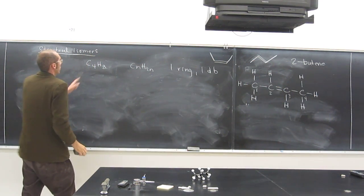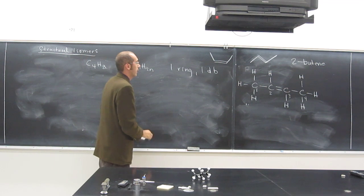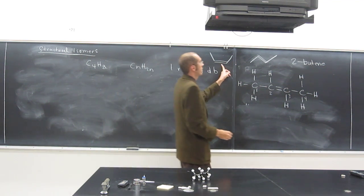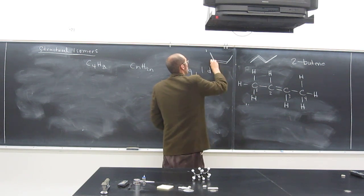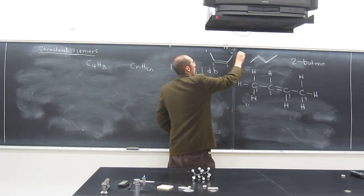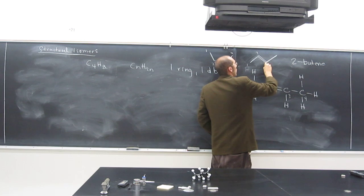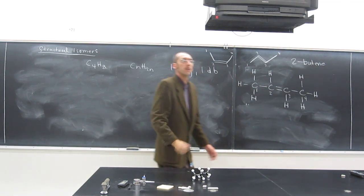Remember, C4H8 is this thing. This is 2-butene, and this is 2-butene, right? Because we go 1, 2, 3, 4, 1, 2, 3, 4. So, they're both 2-butene, right?